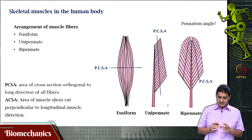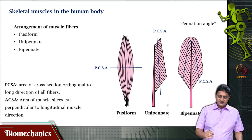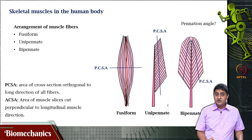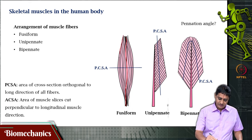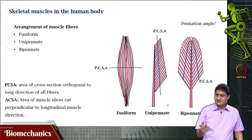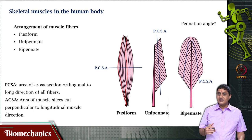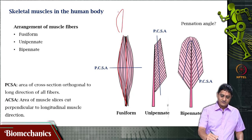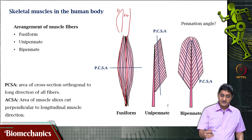We said that if a muscle has the spindle shape, the fiber in the middle will have a length that is smaller than the fiber at the end, and that makes sense. It does not require much thought to agree or understand this. Why? Because this fiber is having a curvature and the other is not. Let us call this fiber 1 and this fiber 2.